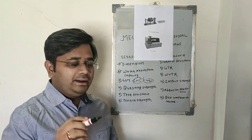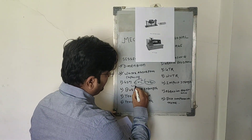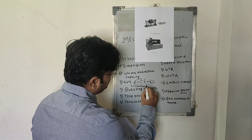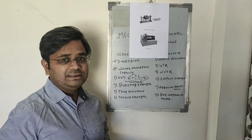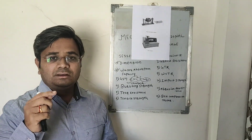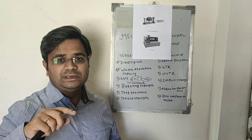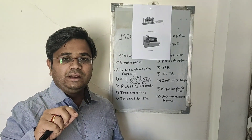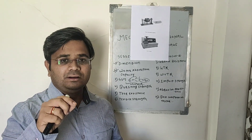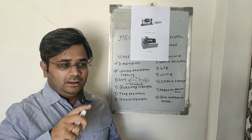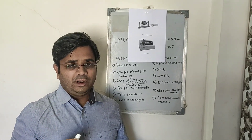You can cut the sample using a GSM cutter or cut it directly to a defined size. Then calculate the weight by placing it on a weighing balance, and after that calculate the GSM using the formula.